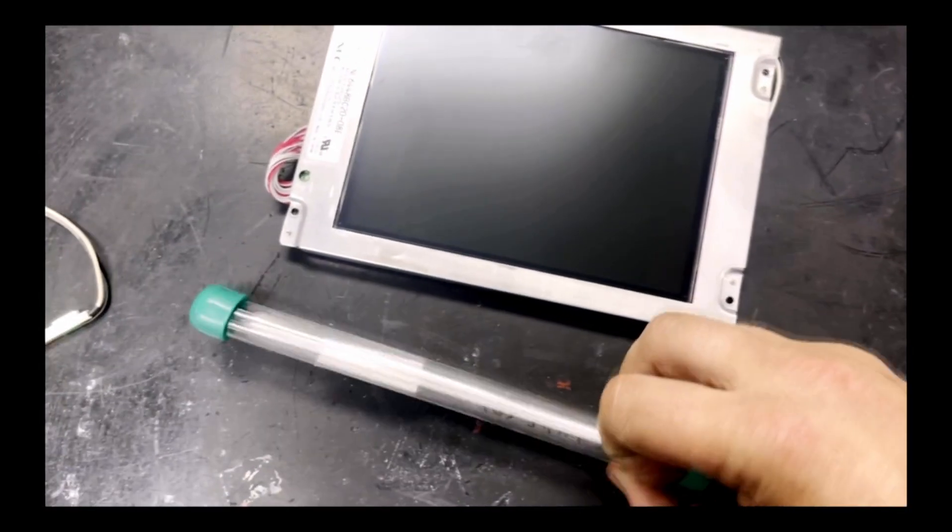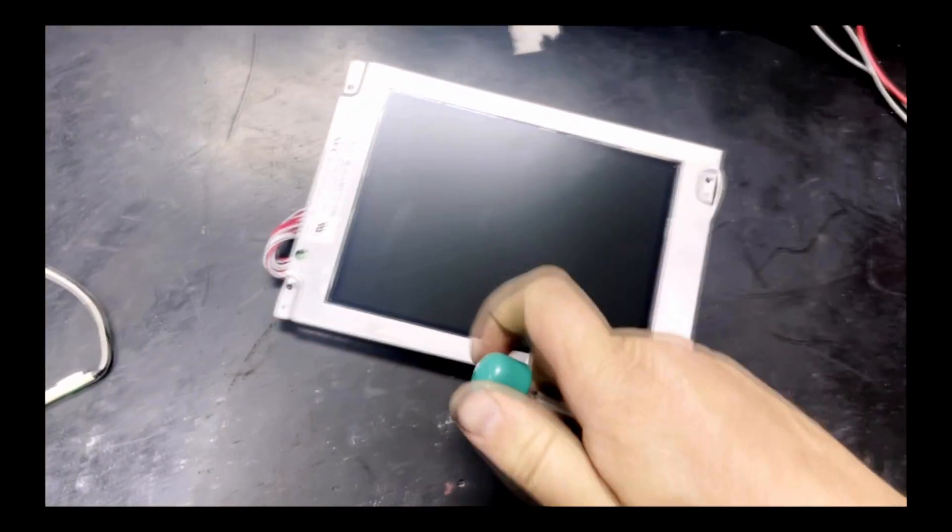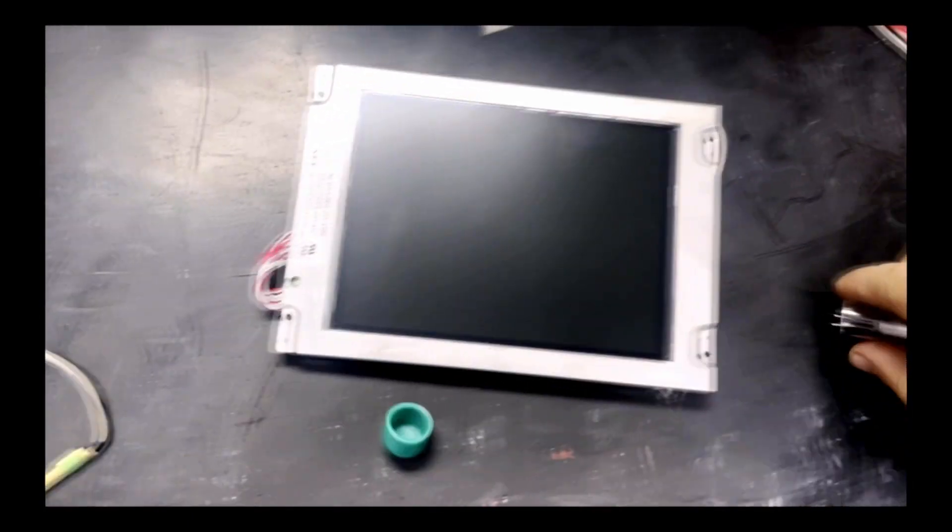Here we have a couple of those bulbs which is the component inside that can go bad just like a light bulb can go bad in your home. We'll show you these bulbs here.